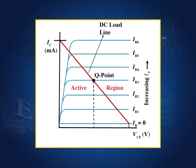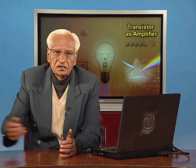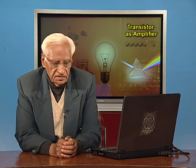And the common emitter amplifier — the important thing is that the output is out of phase with the input by pi, or by 180 degrees.